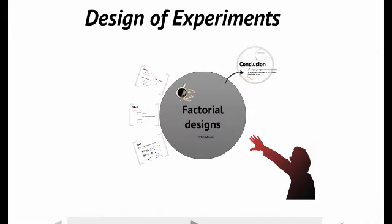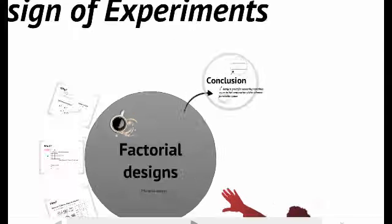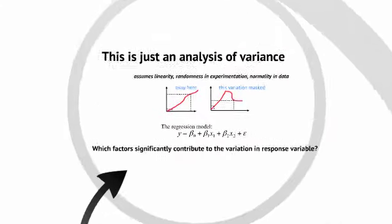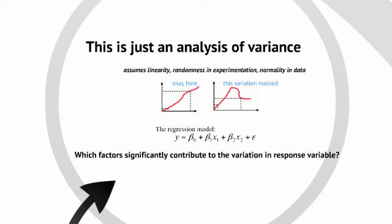So that's factorial designs in a nutshell. So in conclusion, what factorial designs are are really a set of screening designs when you have two to the k factors that you're trying to sort out and determine which ones are important in the parameter space. Notice this is just an analysis of variance, and you're looking for which factors contribute significantly to the response variable.